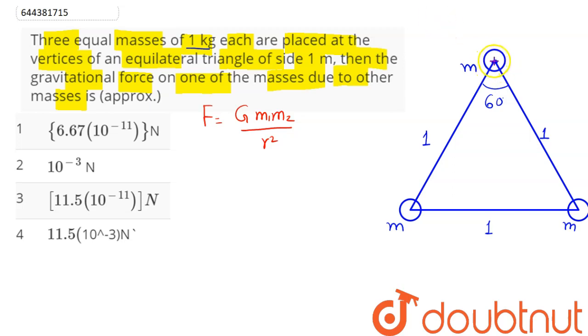So here this force will be of magnitude F as G into m1 and m2, both are same, divided by r square. Now m1 and m2 both are given as 1 kg and distance between them as 1 meter, so 1 into 1 divided by 1, hence this comes as G. So the magnitude of this force is G.